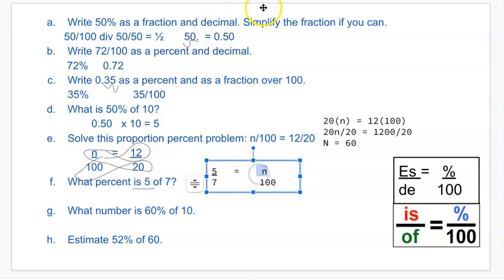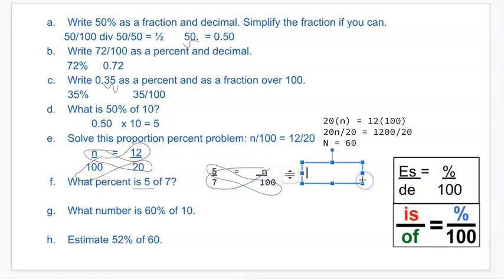And from there you can cross multiply and divide. So you cross multiply. It'd be 500 equals 7N. Divide both sides by 7. 500 divided by 7 equals N, and you can plug that into a calculator.